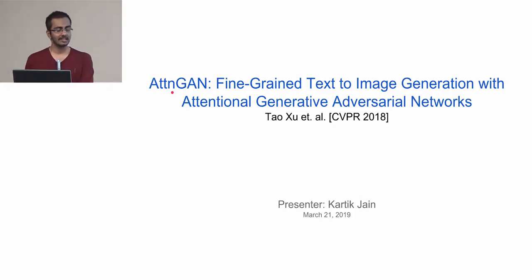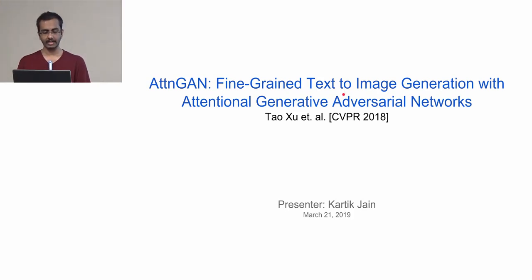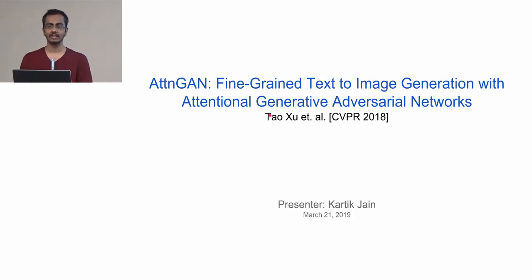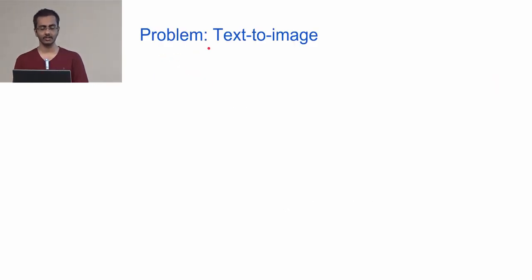Hello everyone, I'm Karthik and I'm going to present work done by Tauzoo et al., which was published in CVPR 2018. It's titled AttnGAN: Fine-Grained Text to Image Generation with Attentional Generative Adversarial Networks. So let's start off by first defining the problem, which is text to image.